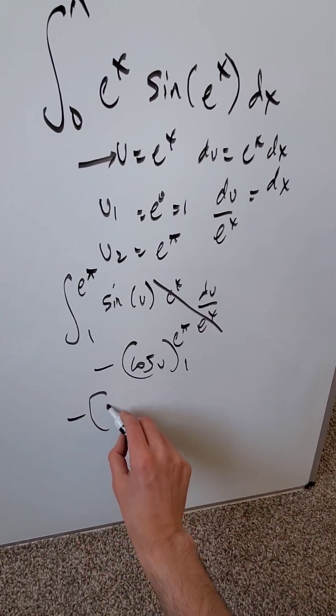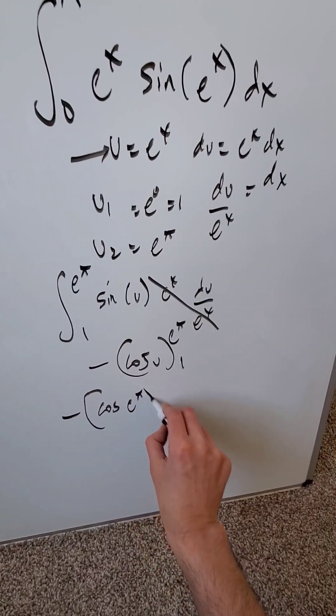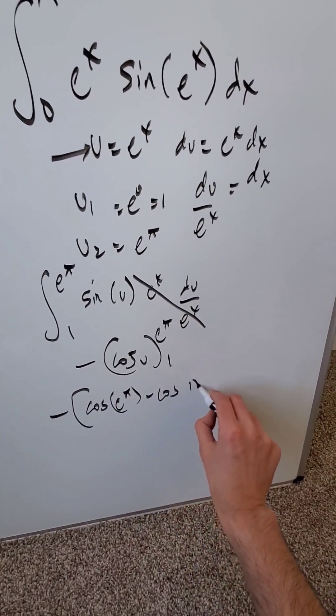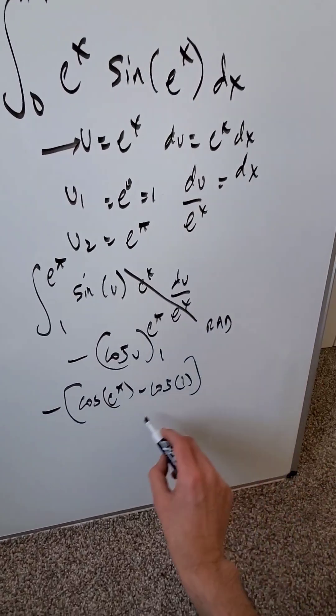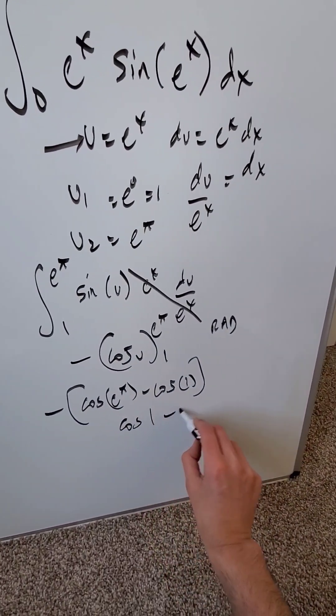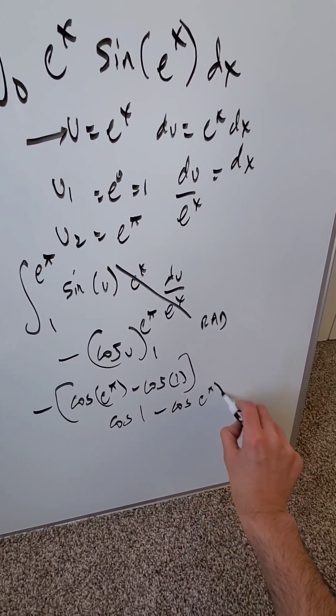I can write my answer as negative cosine of e to the pi minus negative cosine of 1. If you want a numerical value, you can use your calculator in radian mode. I'll keep my answer as cosine 1 minus cosine e to the pi, and we're done.